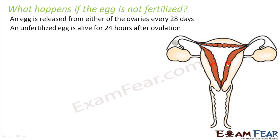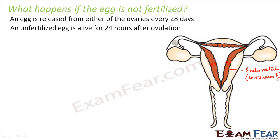This lining of the uterus is called the endometrium. The uterus has three layers: the exoperimetrium, myometrium, and endometrium — the endometrium being the innermost layer. This innermost layer is highly vascular in nature, richly supplied with blood to nourish the embryo. The endometrial lining thickens to prepare itself, but since the egg has not been fertilized, there will be no embryo coming to the uterus.